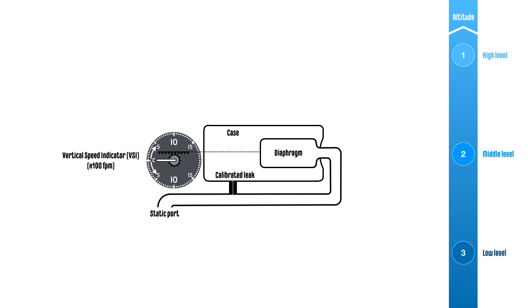For demonstration purposes, let's assume that at low level altitude, static pressure has a value of three units. The middle level has two units and high level has only one unit.